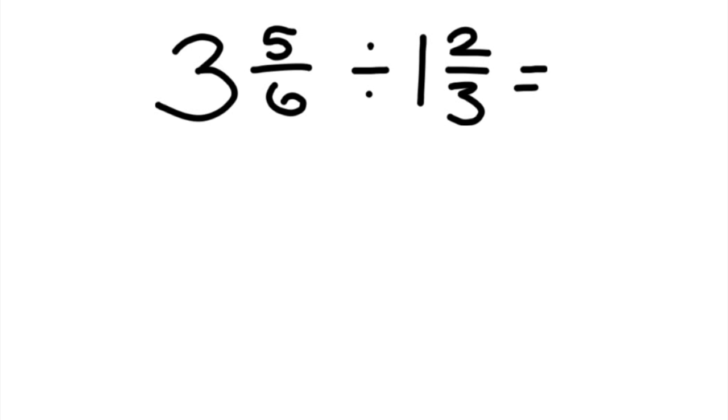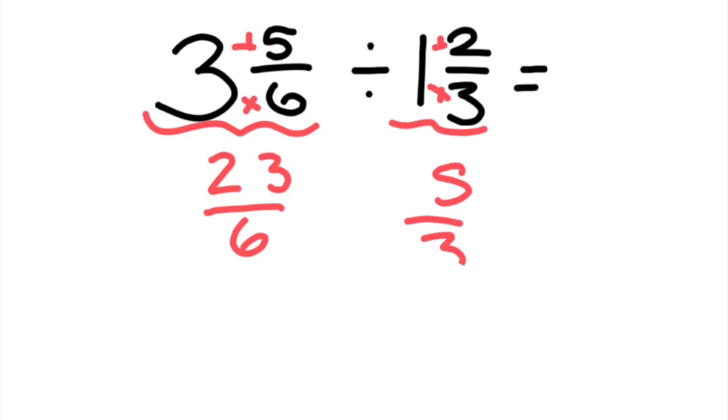Let's try a harder one. We have 3 and 5 sixths divided by 1 and 2 thirds. Before we can do anything, we need to change these mixed numbers to improper fractions when we're multiplying and dividing fractions. So we've got 23 sixths, and 2 thirds is 5 thirds.